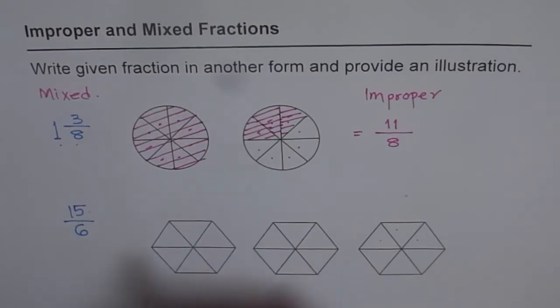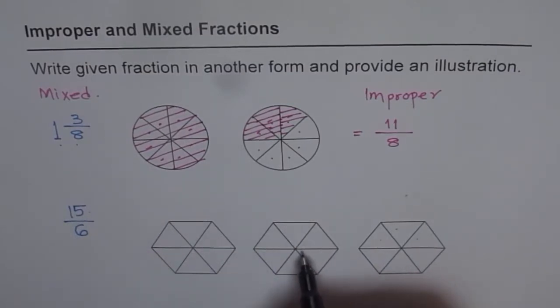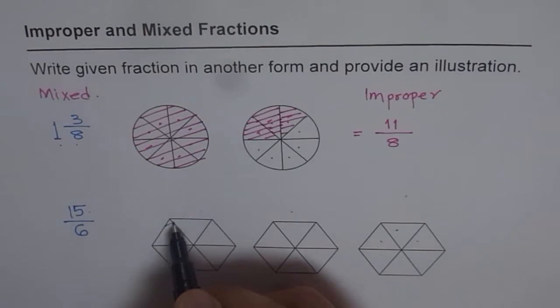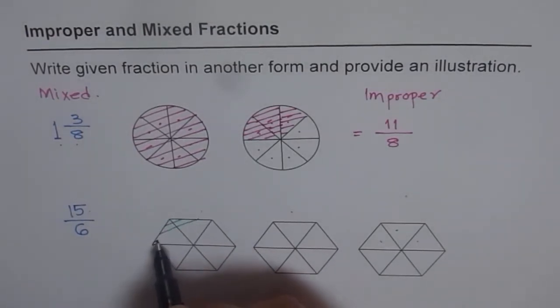So we got 6 and 6, 12, and then 13, 14, 15. So we have to color 6 plus 6 plus 3. So 6 you can color like this. That is faster way of doing it.